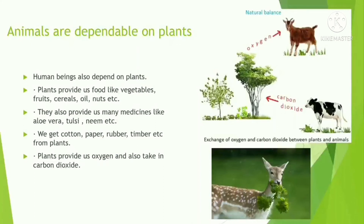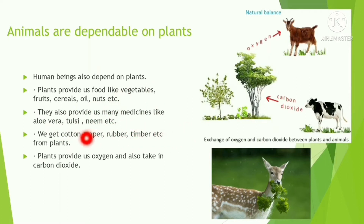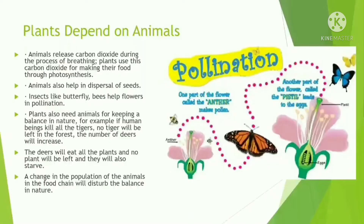Human beings also depend on plants because plants provide us food like vegetables, fruits, cereals, oil, and nuts. They also provide medicinal plants like aloe vera, tulsi, and neem. We also get cotton, paper, rubber, and timber from plants. Plants provide us oxygen; without oxygen we cannot live, and they also take in carbon dioxide.